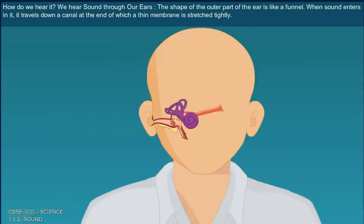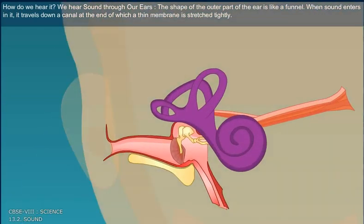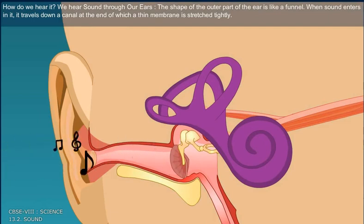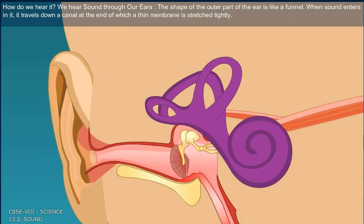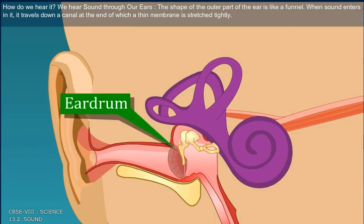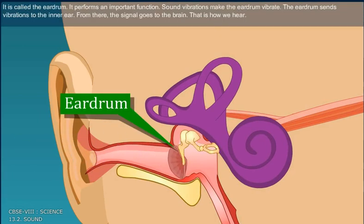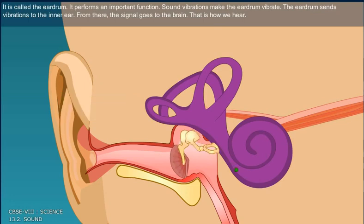The shape of the outer part of the ear is like a funnel. When sound enters in it, it travels down a canal, at the end of which a thin membrane is stretched tightly. It is called the eardrum. It performs an important function.